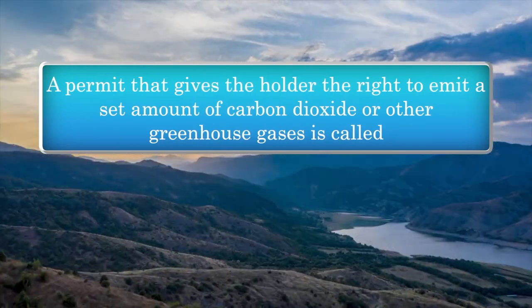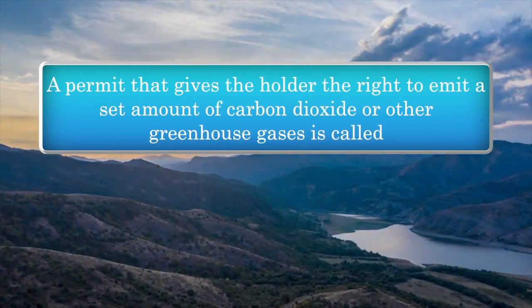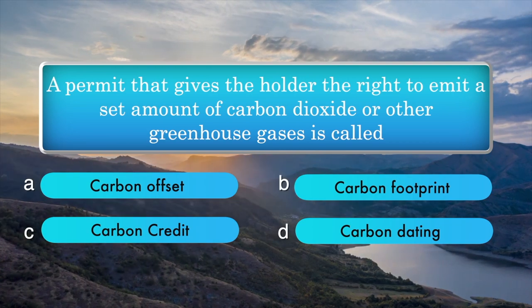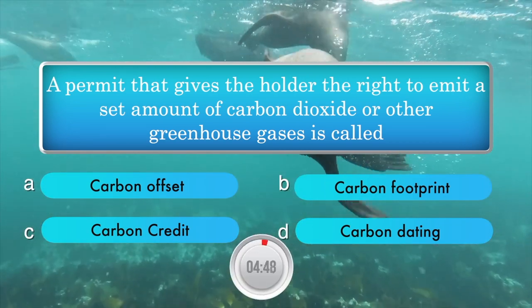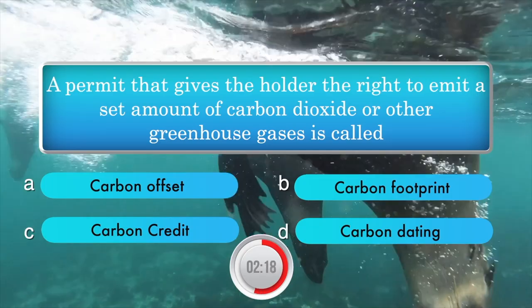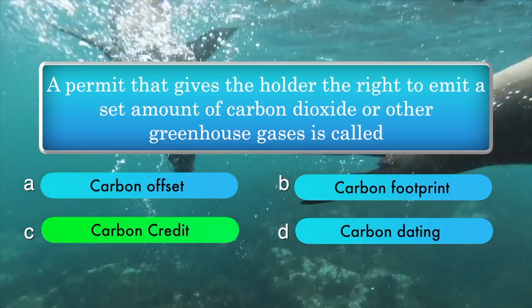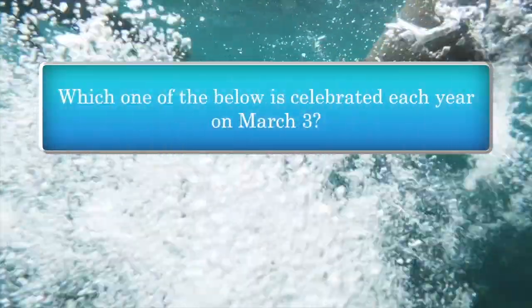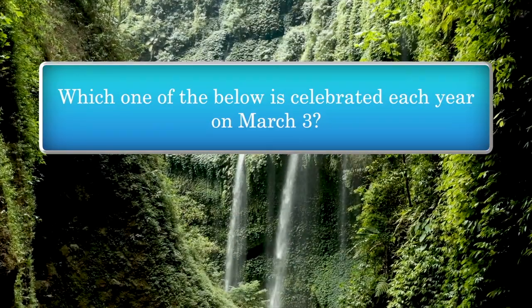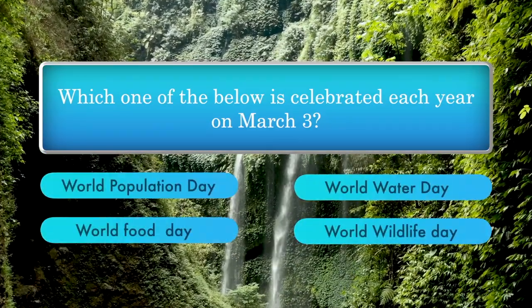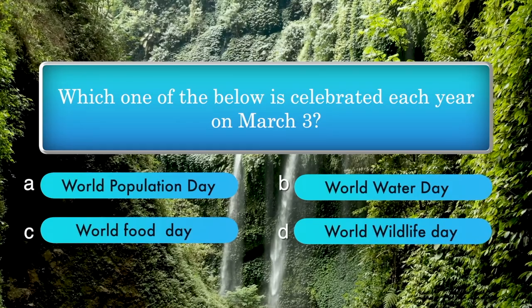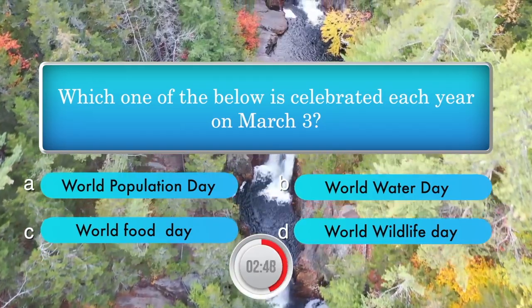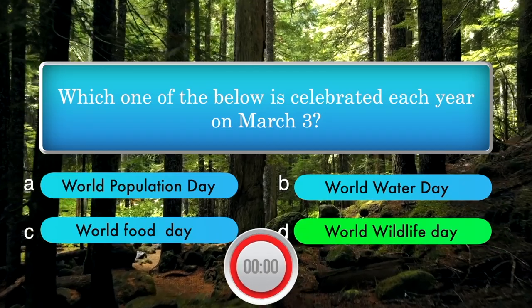A permit that gives the holder the right to emit a set amount of carbon dioxide or other greenhouse gases is called — options: carbon offset, carbon footprint, carbon credit, carbon dating. Answer is carbon credit. Which one of the below is celebrated each year on March 3rd? Options: World Population Day, World Water Day, World Food Day, World Wildlife Day. Answer is World Wildlife Day.